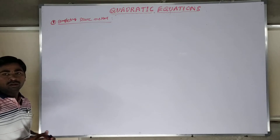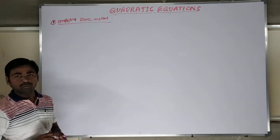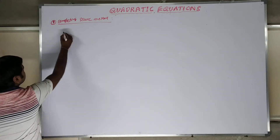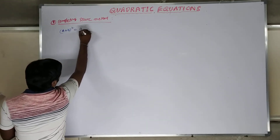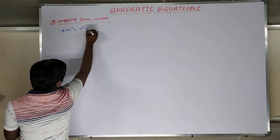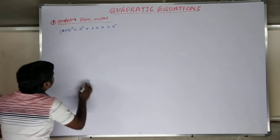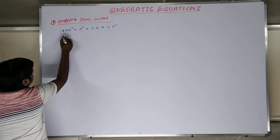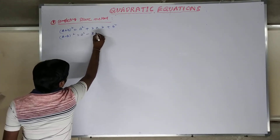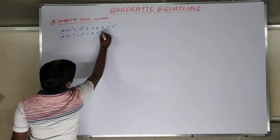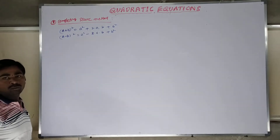In the Complete Square Method we have only two formulas, and those two formulas are very important. Those who don't know, please learn these. The first is A plus B whole square equals A squared plus 2AB plus B squared. The second is A minus B whole square equals A squared minus 2AB plus B squared. These are the two formulas required when solving problems.